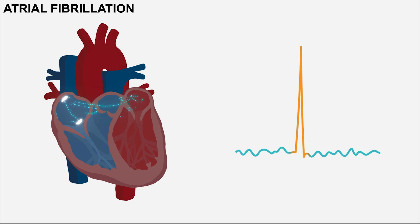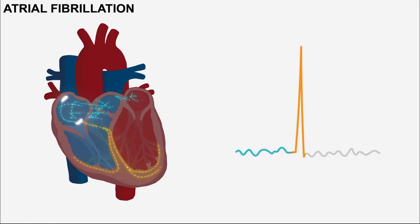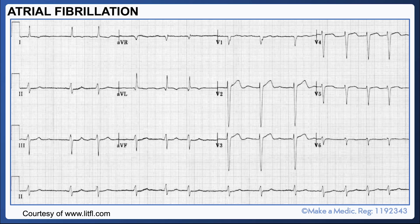The electrical impulses conduct through the ventricles unpredictably, which is why the QRS complexes appear irregularly. Let's have one more look at a slowed down version of AF. In a 12-lead ECG, in short, it causes an irregularly irregular tachycardia with no visible P waves.